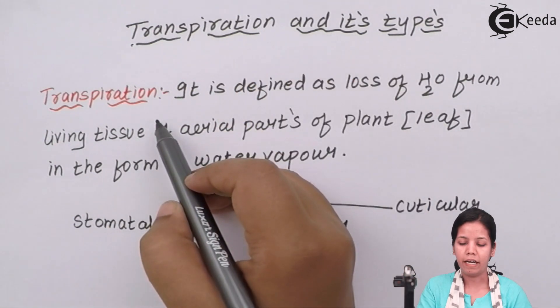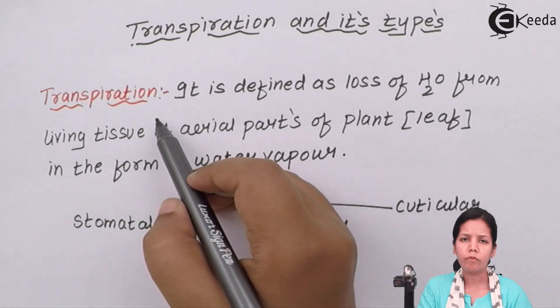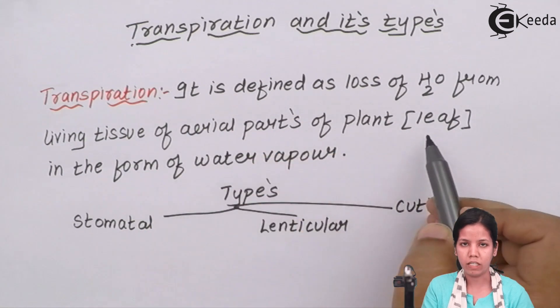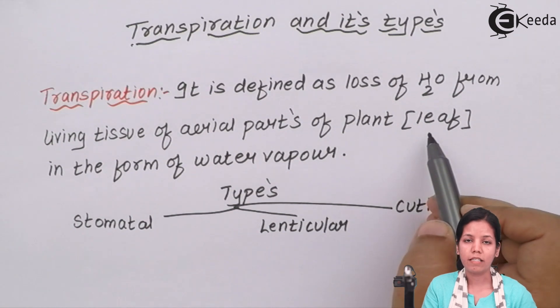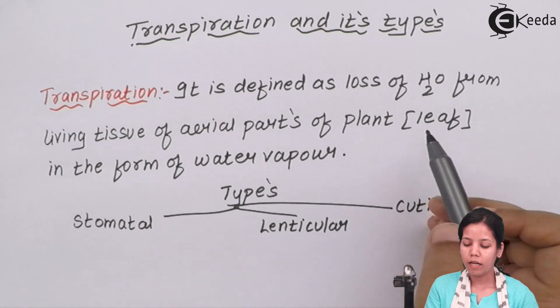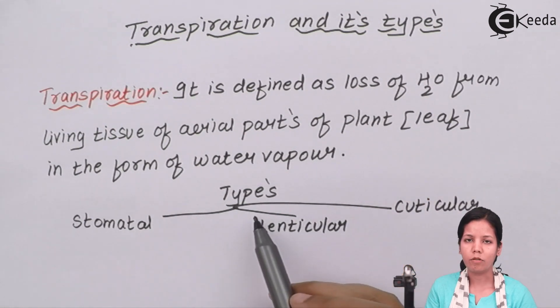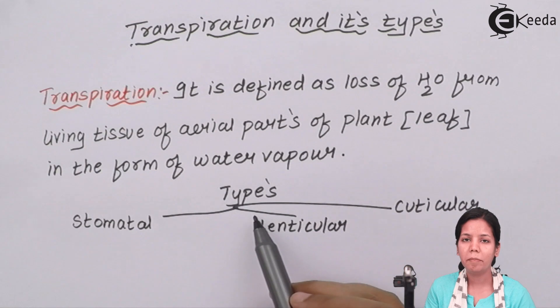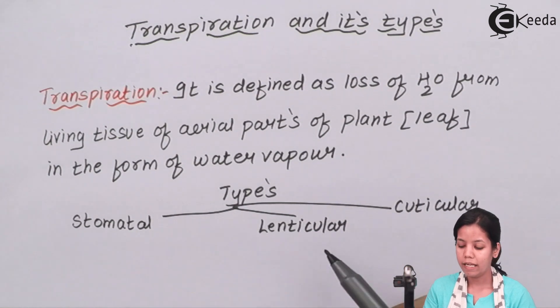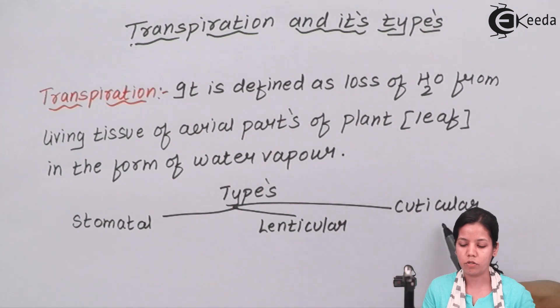Transpiration can be defined as loss of water from the upper surface of the leaf, which takes place in the presence of sunlight. Loss of water is carried out by the opening of stomata or guard cells. There can be three types of transpiration available in plant kingdom: stomatal transpiration, lenticular transpiration, and cuticular transpiration.